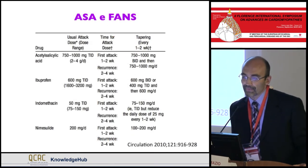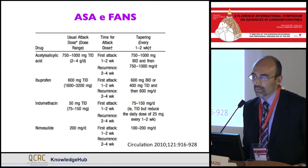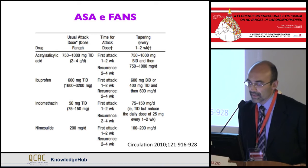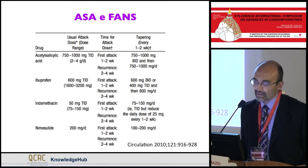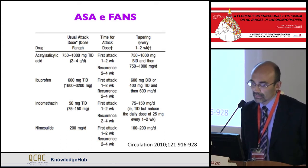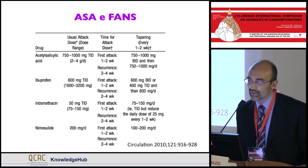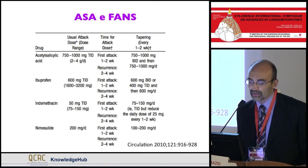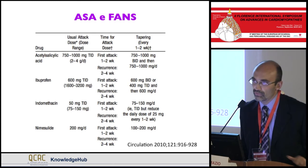Empiric anti-inflammatory therapy is useful because even when pericardiocentesis or pericardial biopsies are performed, results are not immediately available. Aspirin or NSAIDs should be considered the mainstay of therapy. The main choices are aspirin, ibuprofen, or indomethacin. Usual attack doses are aspirin 750–1000 mg three times daily, ibuprofen 600 mg three times daily, and indomethacin 50 mg. It is important to give these drugs every eight hours to maintain full control of symptoms throughout the day.